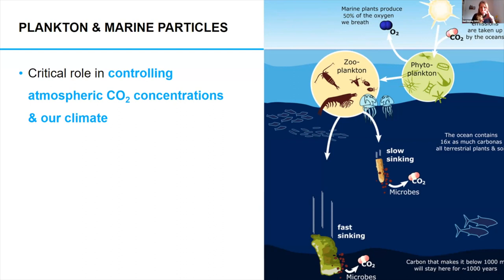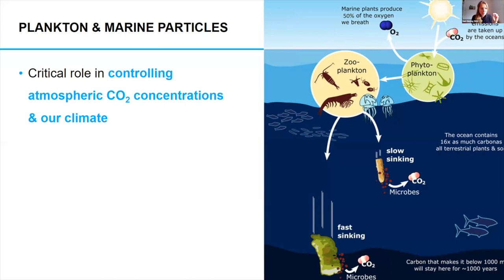These together produce particles in the ocean. When they die, they sink down into the deep ocean — a bit like compost in your garden — taking all the carbon they've assimilated into the deep sea. That is actually a massive storage for carbon. The deeper these particles sink, the longer the carbon is stored away. You can roughly say that if plankton detritus makes it to about a thousand metres depth, it's going to be locked away for a thousand years. Plankton and marine particles play a critical role in controlling atmospheric CO2 concentration and our climate.